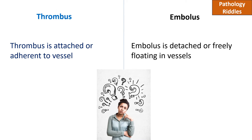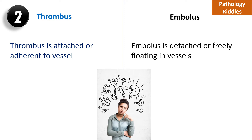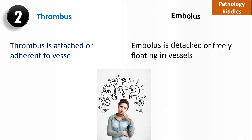A thrombus is attached or adherent to the vessel where it is formed, while an embolus is detached or freely floating in the blood vessel.